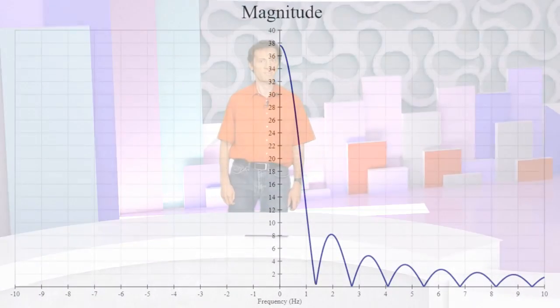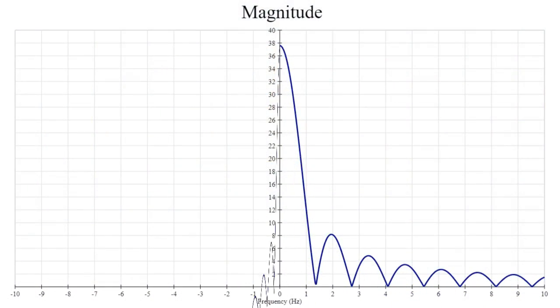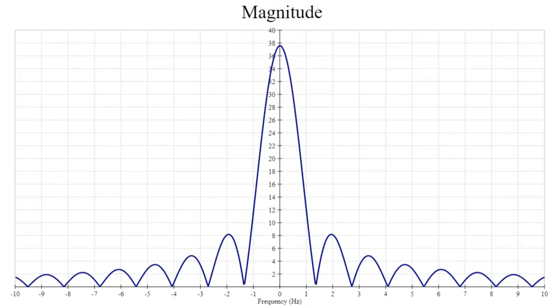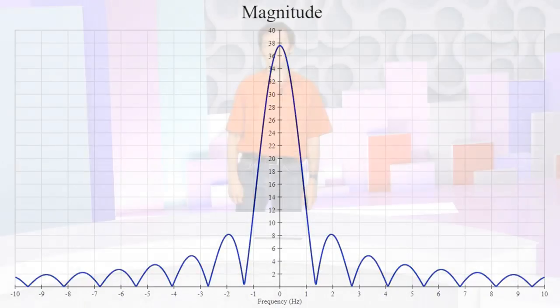Ask any mathematician why the Fourier transform of a signal produces a magnitude spectrum that is symmetrical about 0 Hz, and they'll probably answer: because your signal is real. Well, of course it's real, you might be thinking — I didn't imagine it. The thing is, what you mean by real and what a mathematician means by real may not be the same thing.